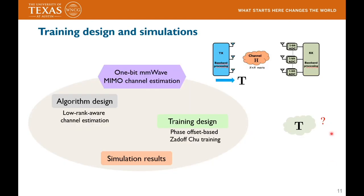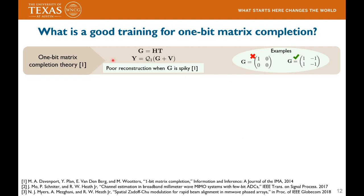Now that we have a good algorithm for low-rank matrix completion, the next problem is training design — what should the training block T be for better channel reconstruction? To answer this, let's look at 1-bit matrix completion theory from prior work. This theory tells us that it is hard to recover low-rank matrices which are spiky in nature. For example, consider a Dirac matrix with a 1 in the first location and 0 everywhere else, versus a matrix of all ±1 entries. Both have rank 1, but the Dirac is spiky since its energy is concentrated in a single location. As zeros in the Dirac are at the threshold of 1-bit quantization, the algorithm can easily confuse it with other low-rank matrices — an issue avoided with the second matrix.